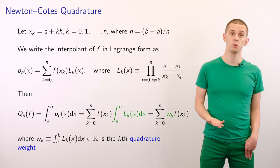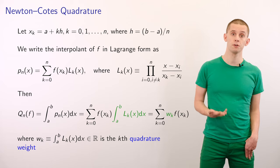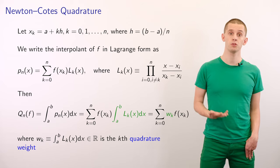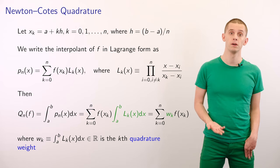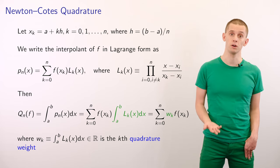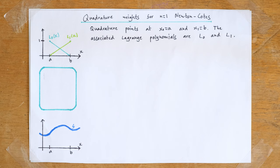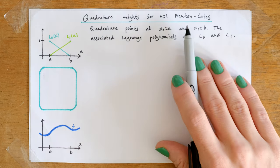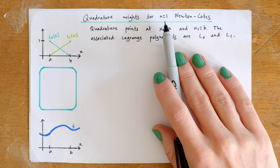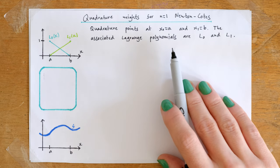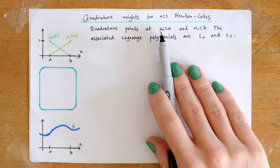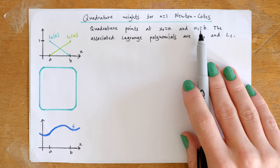We'll now look at a few examples. First, we're going to look at the case when n equals 1, and we'll see that this will actually recover the trapezoid rule that you may have seen in other contexts. Let's now look at calculating the quadrature weights for the Newton-Cotes quadrature scheme when n equals 1. If we're integrating over an interval from a to b, then we'll have two quadrature points at x0 equal a and x1 equal b.